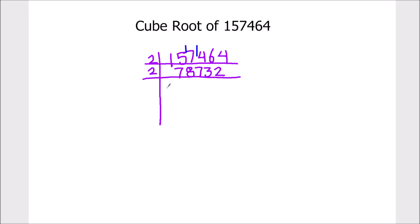Again we are going to divide it by 2. 2 times 3 is 6, 1 is remainder, this becomes 18. 2 times 9 is 18, 2 times 3 is 6, 1 is remainder, this becomes 13. 2 times 6 is 12, 1 is remainder, this becomes 12 and 2 times 6 is 12.